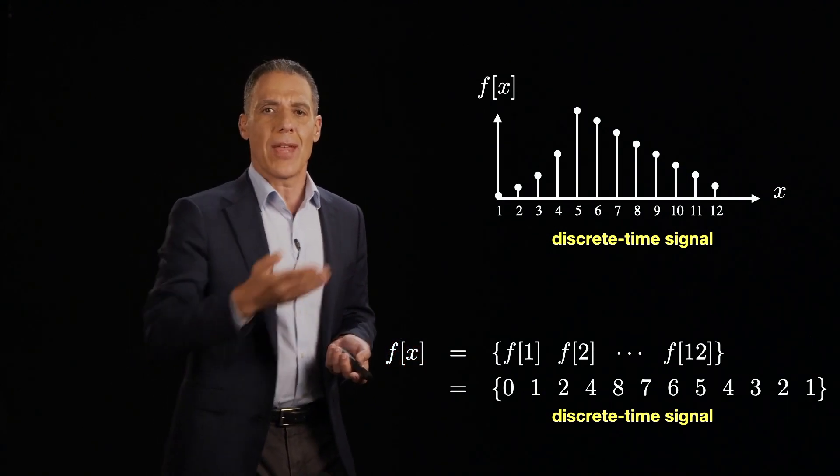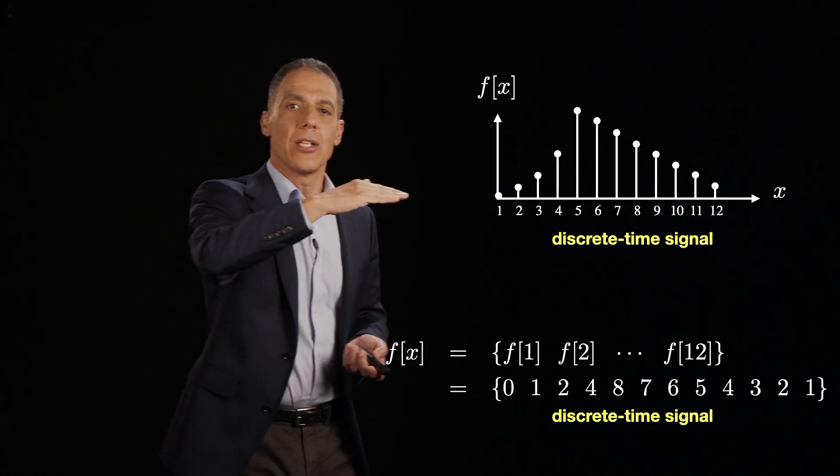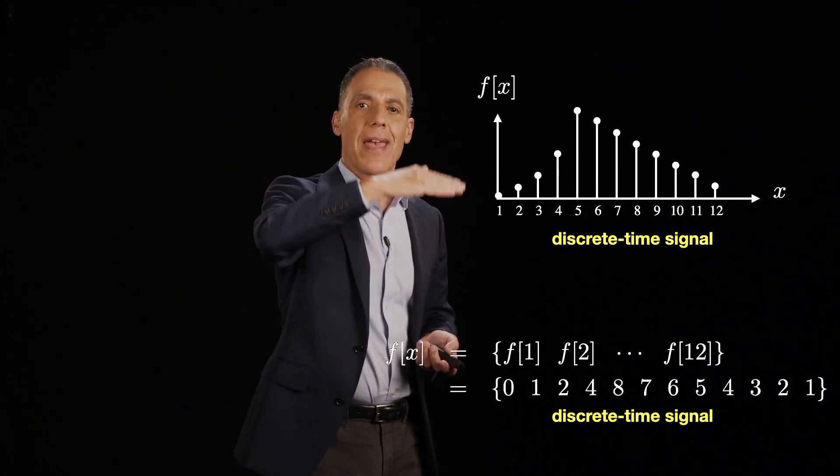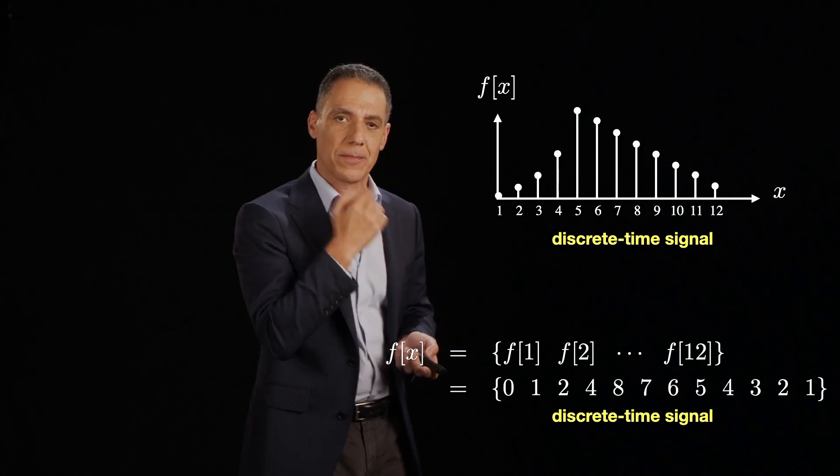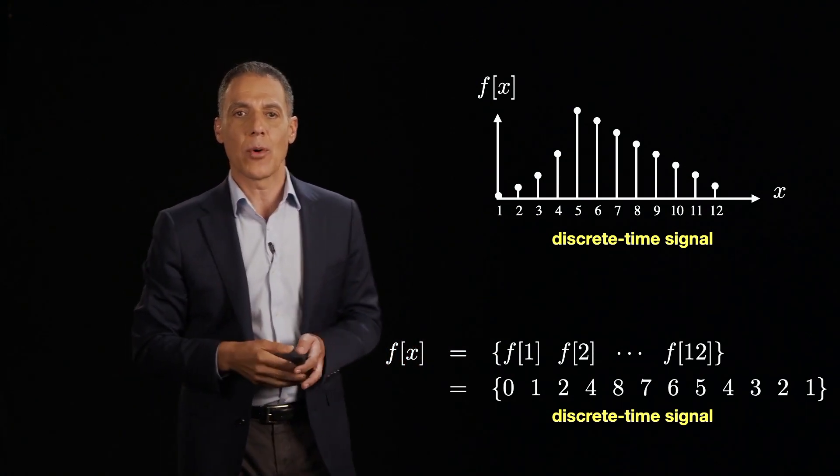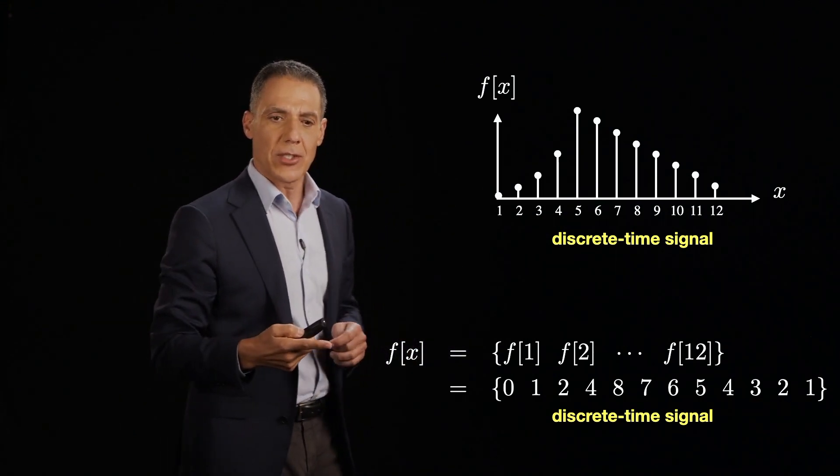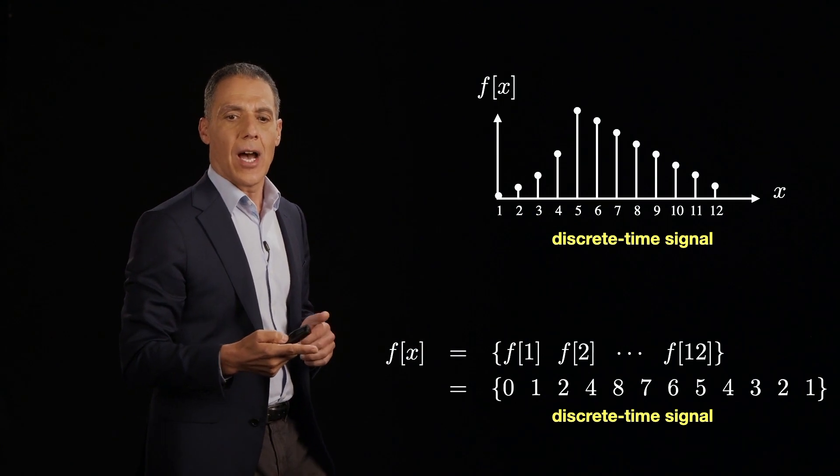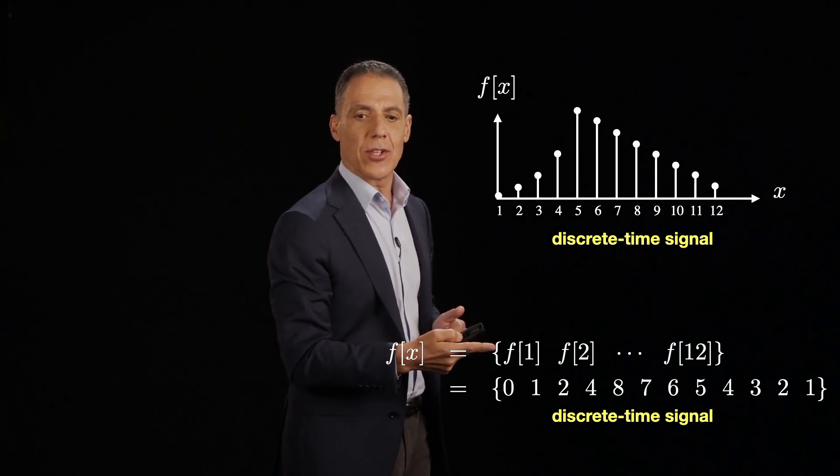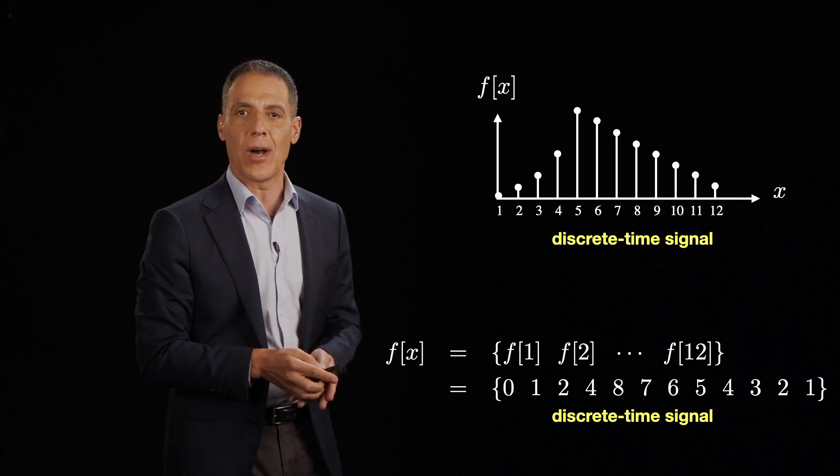So how do I represent that? Here's one representation. It's graphical. I'm just plotting using this little stem plot, the value at each moment in space. Now I can also represent it numerically. So I'm going to denote my signal f of x as the set of values, f sub 1, f sub 2, up to f sub 12.